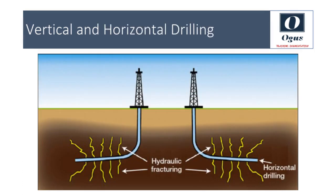Conventionally wells are drilled vertically, but today with the advent of new directional drilling technology, drilling through the reservoir rock for kilometers is possible. It has made it possible to produce a large section of the reservoir from a single well. After a certain depth is reached, a special tool is inserted through the drill string, allowing a gradual turn of the drill string until a horizontal pathway is reached. Horizontal drilling has opened up new avenues to produce so-called tight reservoirs like shale.